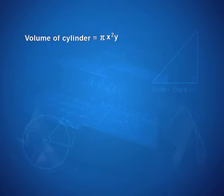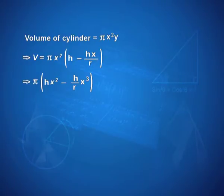Volume of cylinder is nothing but π square of radius into the height. So, in this case, it is π x² y and so replacing y in terms of x using what we derived earlier, I get a function as π times hx² minus h/r x³. This is the function which we need to now maximize. So, now the procedure is mechanical.